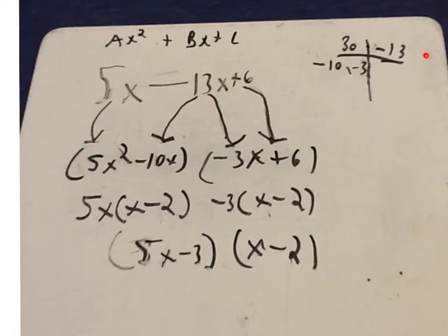The first step is called the meme chart. The meme chart means multiply the ends and then add the middle. And the two numbers that you get that equal negative 30 when you multiply them have to equal negative 13 when you add them.